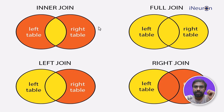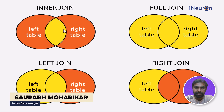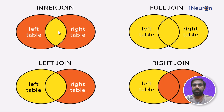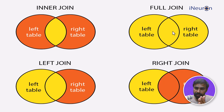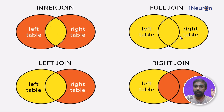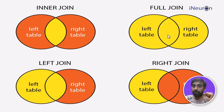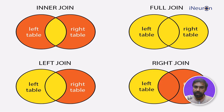The next topic is full join. Inner join gives you only the common data — the common rows present in both the left table and right table. When it comes to outer join, the yellow position represents the union. If you're aware of basic set theory, inner join looks at the intersection — the common data — while outer join looks at the entire union, meaning data present either in the left table or the right table, or both.